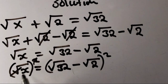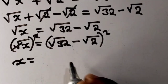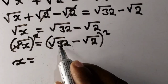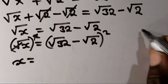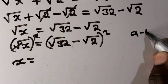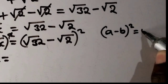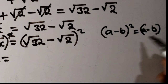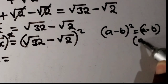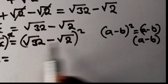Squaring both sides, the square root and square cancel, so we remain with x equals the quantity root 32 minus root 2, raised to the power of 2. This is the same as the form a minus b squared.